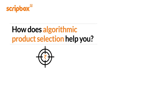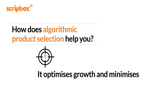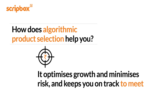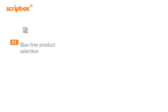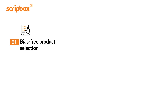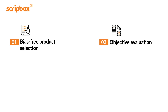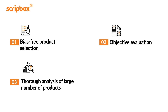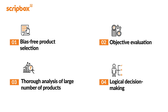How does algorithmic product selection help you? Fundamentally, it offers an investment experience that optimizes growth, minimizes risk, and keeps you on track to meet your financial goals. You get bias-free product selection — commissions don't sway our decisions. Objective evaluation — minimal human intervention eliminates emotional and behavioral biases. Thorough analysis — we test thousands of financial products across dozens of parameters regularly, choosing the best ones only. Logical decision making — every decision we make about selecting products is backed by science and logic.